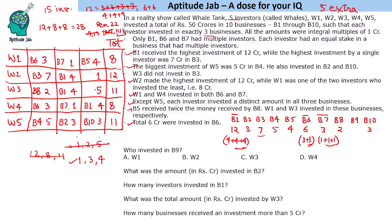B7 should receive 3 investments total: w1 contributes 1 crore, so two more investors each contribute 1 crore — meaning 3 people invest in b7. The remaining business b9 receives 5 crores from w3. This completes the full investment table for all five whales.